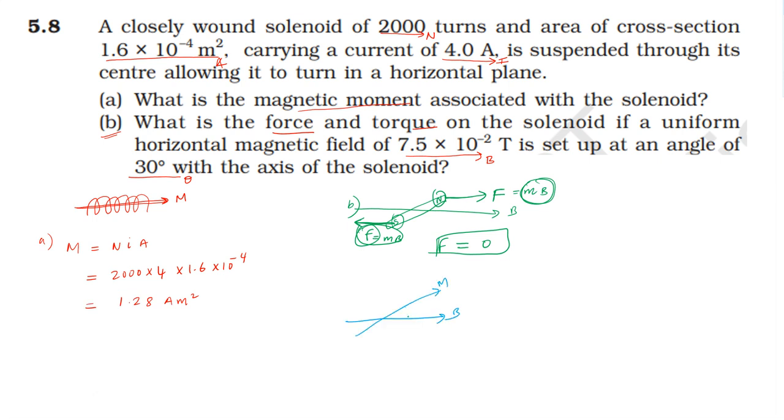The torque: magnetic moment M equals one point two eight, the field B is seven point five into ten power minus two tesla, into sine theta, sine thirty equals one by two. Simplifying gives the answer.